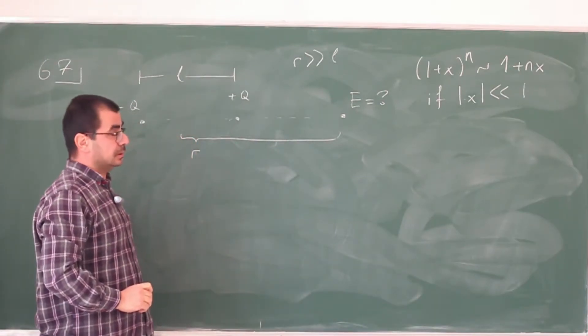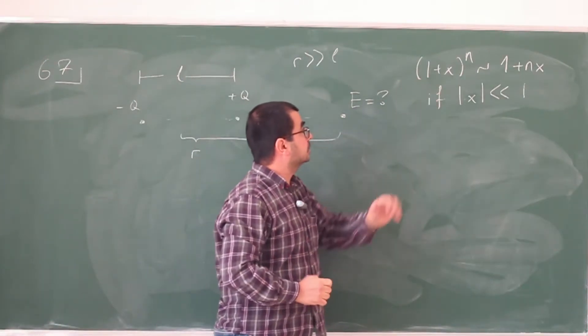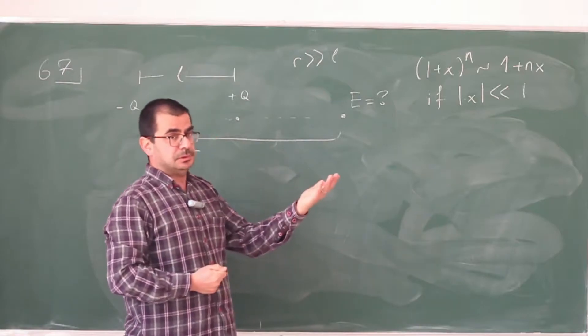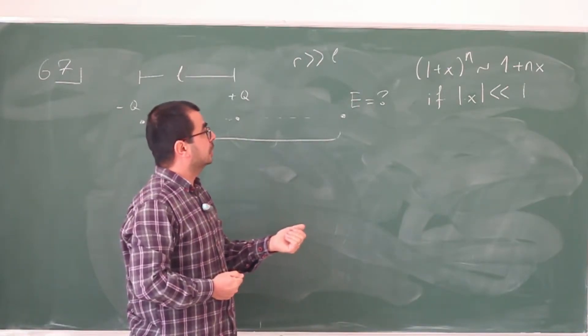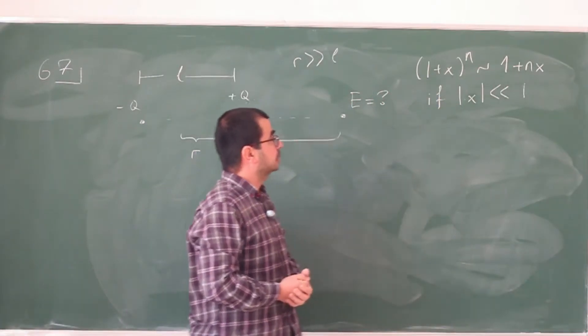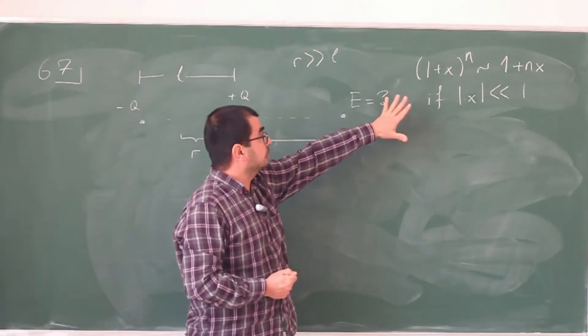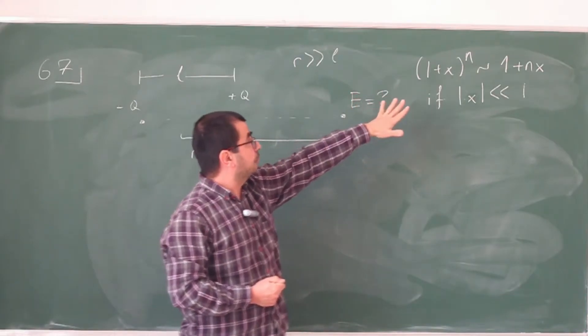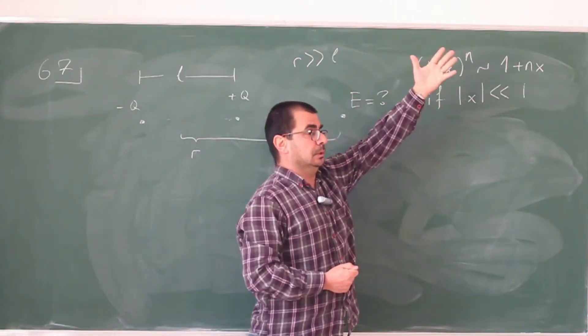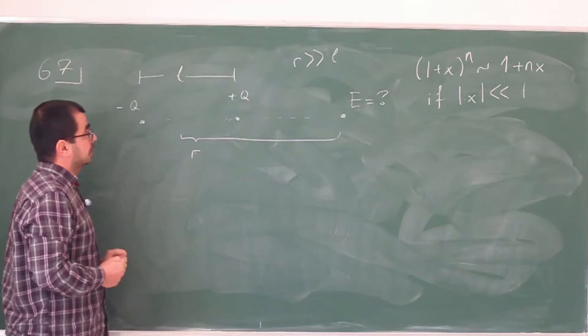This just follows from the Taylor expansion of this function around x equals 0. And if you need actually higher order terms x squared, x cubed, you can just carry out the expansion to a higher order as well. So this is basically what we are going to use. So we have to turn our expressions into a form 1 plus a small number to some power to utilize that one.